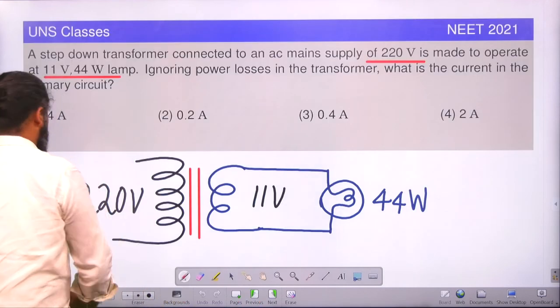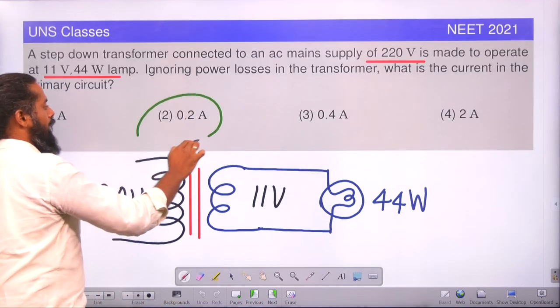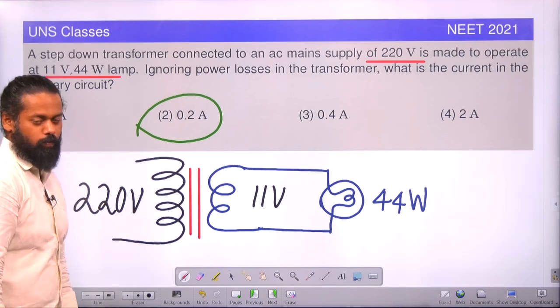Let us see the options. So the current in the primary is 0.2 amps is the correct answer. I hope all of you understood this.